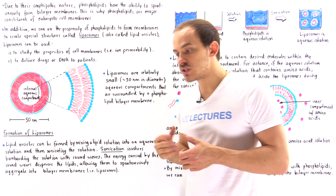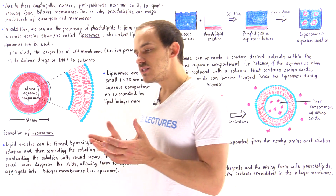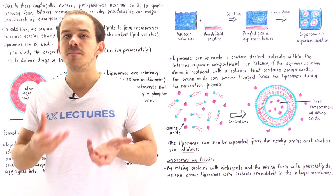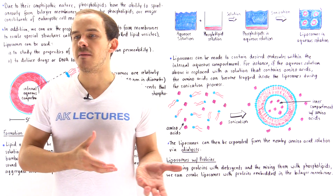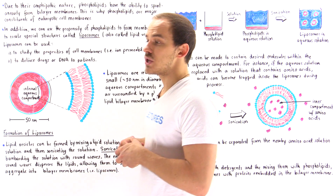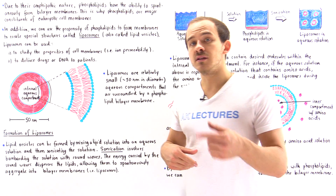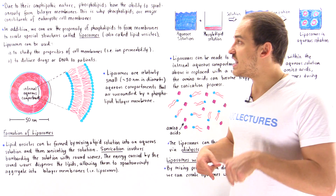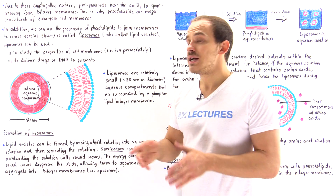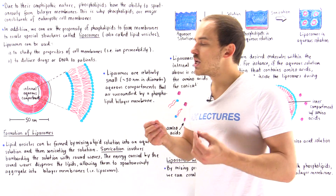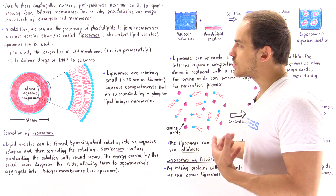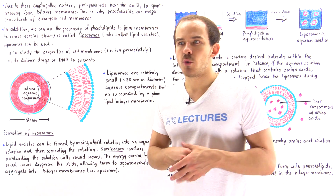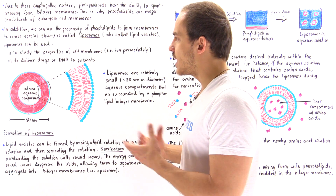Liposomes can be very important because we can use them to study the permeability of cell membranes, and we can use them to deliver drugs and things like DNA molecules to the cells of patients. So what exactly does a liposome actually look like?